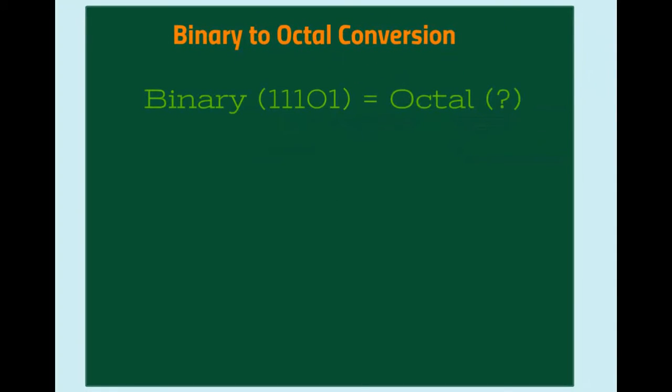Now let's convert binary 11101 into octal number. For binary number 1 1 1 0 1, the leftmost one is MSB and the rightmost one is LSB.